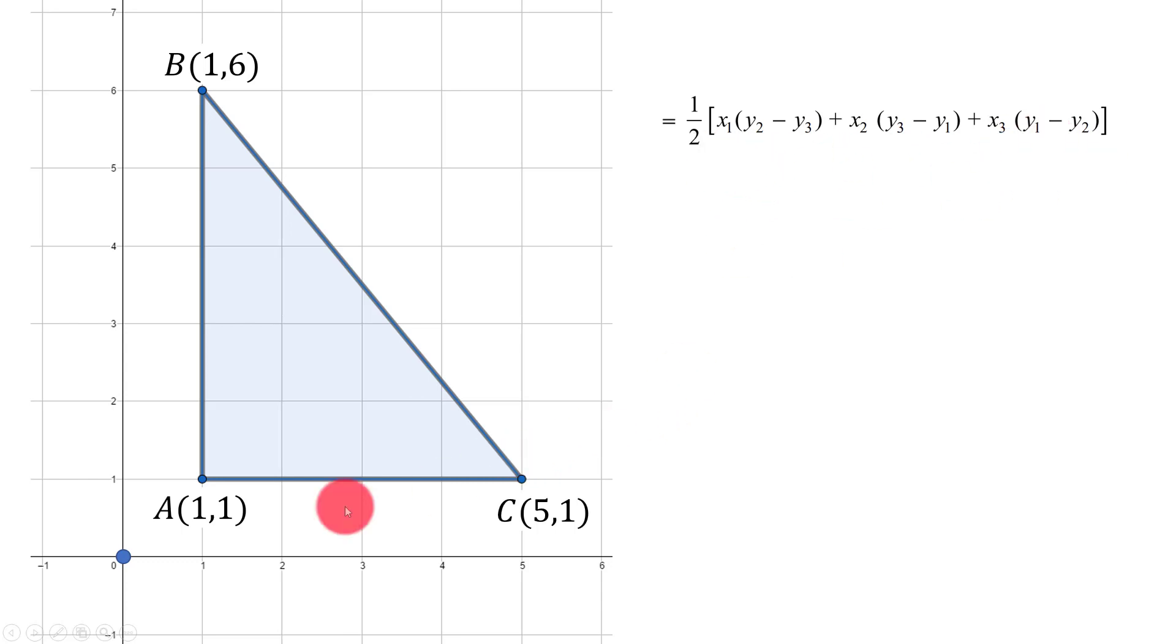In this formula, x1, y1 are coordinates of point A; x2, y2 are coordinates of point B; and x3, y3 are coordinates of point C. Now, putting the respective values, we get the area which is negative 10. Let us interchange